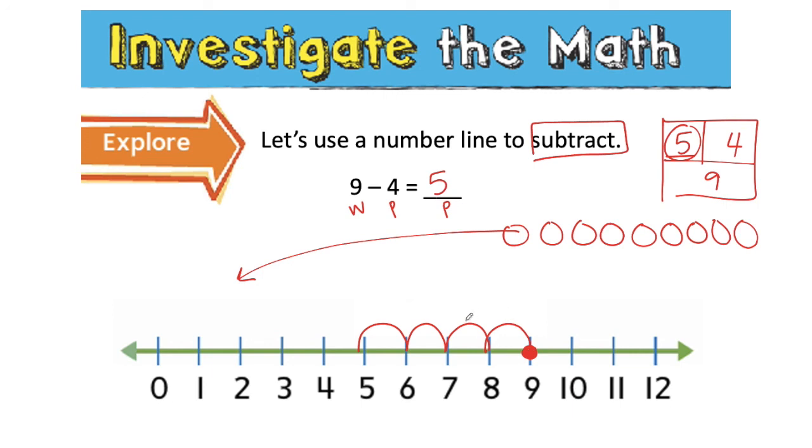I took one, two, three, four hops down the number line, and I landed on five. So nine minus four is five. Did you see what I did there? I started at my whole. I took away the part I knew to find the part I didn't know.